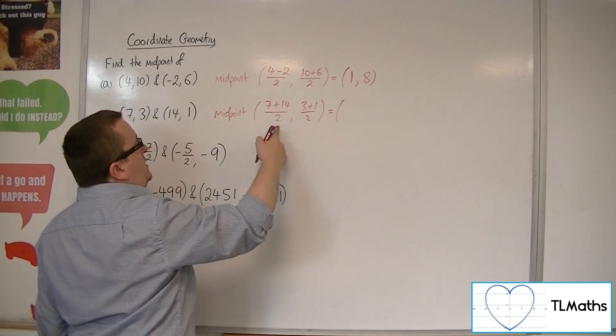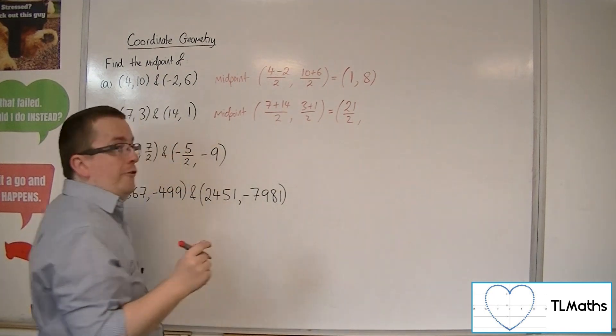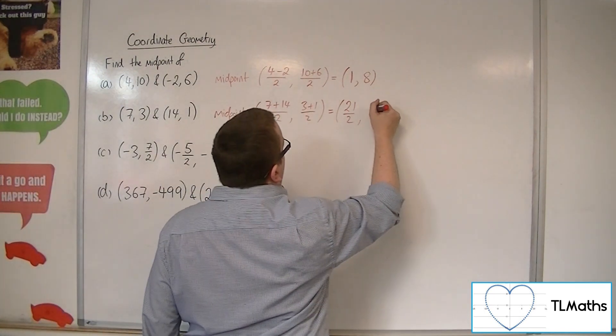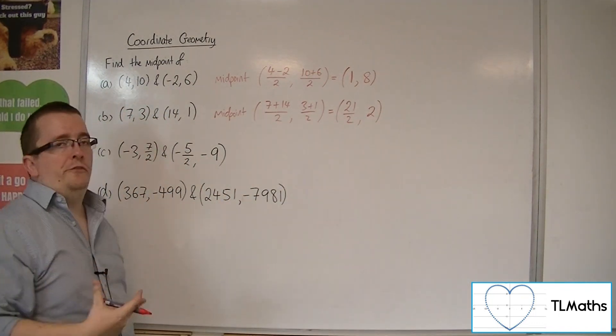7 plus 14 is 21. 21 over 2, so 21 halves. I'm going to leave it in fraction form. 3 plus 1 is 4. 4 over 2 is 2. So 21 halves, 2, or 10.5, 2.